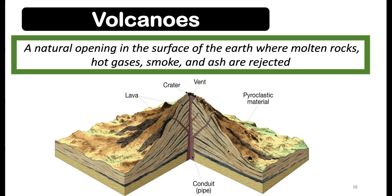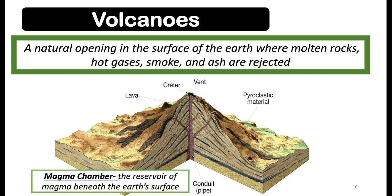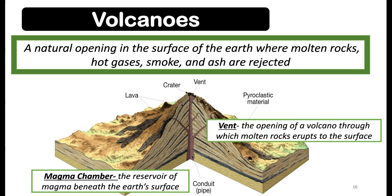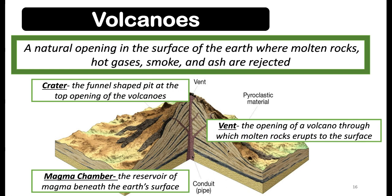Volcanoes are natural openings in the surface of the earth where molten rocks, hot gases, smoke, and ash are ejected. The magma chamber is located inside the volcano — it is the reservoir of magma beneath the earth's surface. The vent is the opening of the volcano through which molten rocks erupt to the surface. The crater is a funnel-shaped pit at the top opening of the volcano.